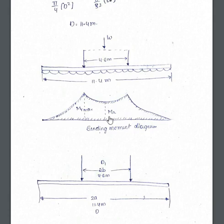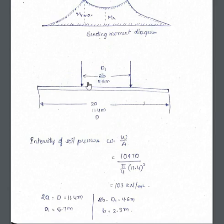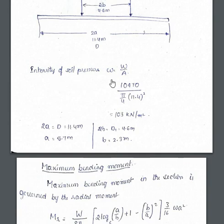At the center, the radial bending moment Mr is found. The maximum radial bending moment Mr_max occurs at the joint where the chimney wall meets the slab. I am denoting the foundation diameter as 2a = 11.4 m and the inner diameter of the chimney as 2b = 4.6 m for calculation purposes.